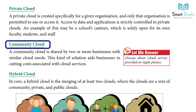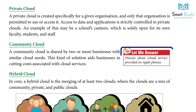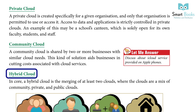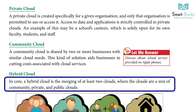Community Cloud: A community cloud is shared by two or more businesses with similar cloud needs. This kind of solution aids businesses in cutting costs associated with cloud services. Hybrid Cloud: A hybrid cloud is the merging of at least two clouds, where the clouds are a mix of community, private, and public clouds.